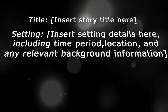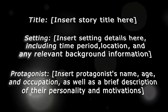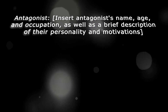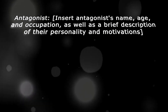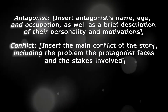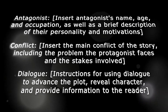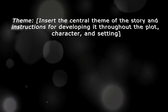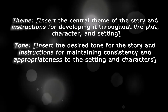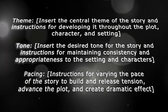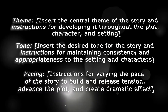After that, I went directly to the prompt template. Title: insert your story title here. Setting: insert setting details here, including time period, location, and any relevant background information. Protagonist: insert your protagonist's name, age, and occupation, as well as a brief description of their personality and motivations. Antagonist: insert antagonist's name, age, and occupation, as well as a brief description of their personality and motivations. Conflict: insert the main conflict of the story, including the problem the protagonist faces and the stakes involved. Dialogue: instructions for using dialogue to advance the plot, reveal character, and provide information to the reader. Theme: insert the central theme of the story and instructions for developing it throughout the plot, character, and setting. Tone: insert the desired tone for the story and instructions for maintaining consistency and appropriateness to the setting and characters. Pacing: instructions for varying the pace of the story to build and release tension, advance the plot, and create dramatic effect.